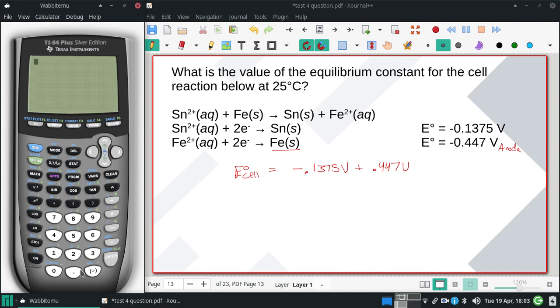So our E° is going to be 0.447 minus 0.1375. Our E° is going to be 0.310 volts, and I'm going to mark it as positive just to clarify.